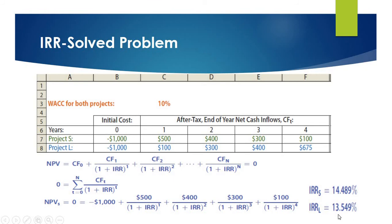Similarly, if we use 13.549% discount rate for Project L, the NPV of Project L will be zero.